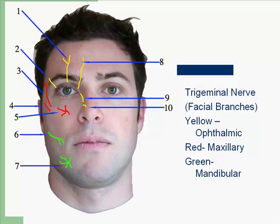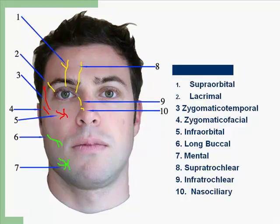Looking at the branches of the trigeminal nerve, yellow represents ophthalmic branches, red represents maxillary, and green represents mandibular. These include the supraorbital, lacrimal, zygomaticotemporal, zygomaticofacial, infraorbital, long buccal, mental, supratrochlear, infratrochlear, and the nasociliary nerves.